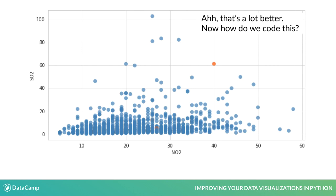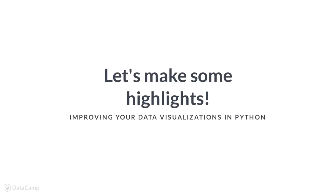This point could be a particularly interesting outlier, or more frequently it may represent something important outside of the data visualization, such as the point corresponding to your company in the midst of its competitors. Those familiar with Matplotlib may ask why we aren't just drawing a second scatter plot of just our highlighted points. By using an array-based method, we can easily add more highlights to our plot or generate the highlights programmatically. Okay, let's get to making some highlighted plots.